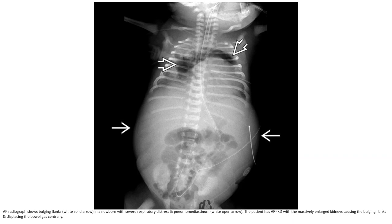AP radiographs show bulging flanks in a newborn with severe respiratory distress and pneumomediastinum. The patient has autosomal recessive polycystic kidney disease with massively large kidneys causing the bulging flanks and displacing the bowel gas centrally.